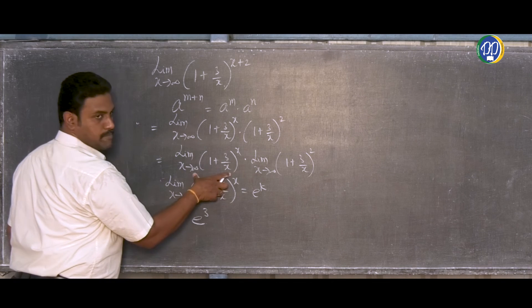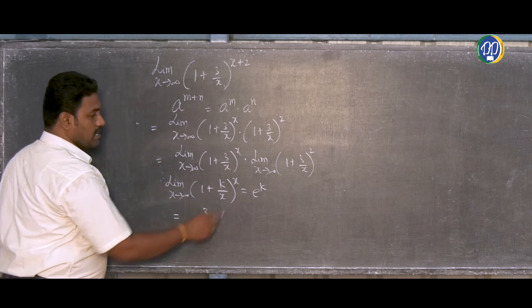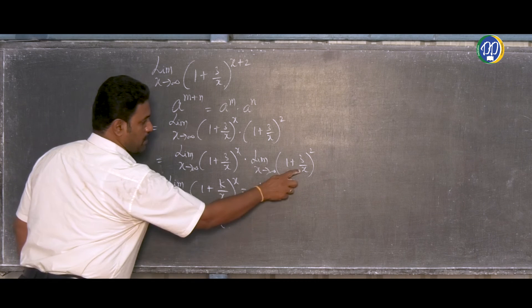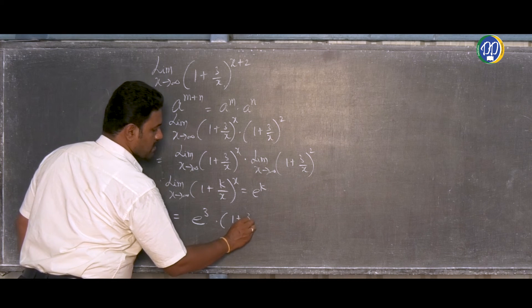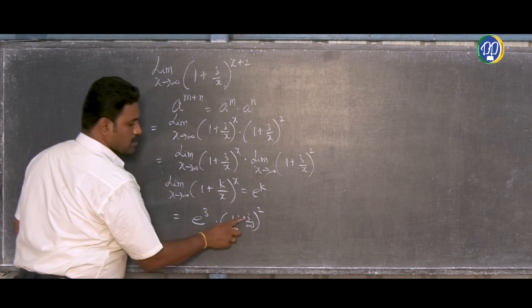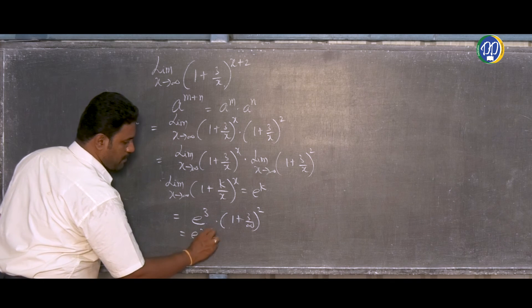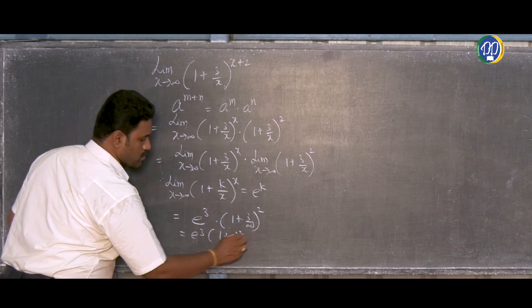So we apply this property to the first term. For the second term, (1 + 3/infinity)^2 - anything by infinity is 0. So e^3 times (1 + 0)^2. 1 plus 0 is 1, 1 squared is 1.